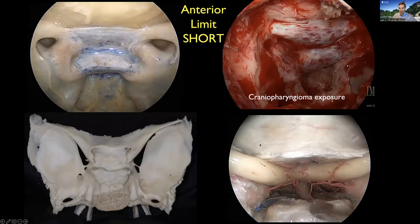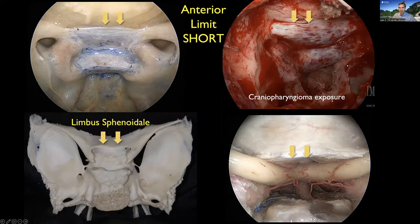Our exposure is very wide, but short — it doesn't need to be very tall. We use the limbus of the sphenoid as our landmark. The limbus of the sphenoid is a dural fold visible in surgery, and in dissections you can see this fold extends toward the roof of the optic canal, continuing as the falciform ligament. That is the limit of our exposure for the majority of craniopharyngiomas, as they grow posteriorly and superiorly toward the third ventricle, not anteriorly. The limbus is our limit.